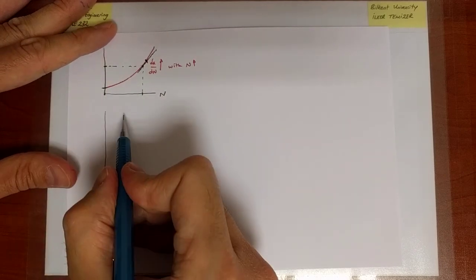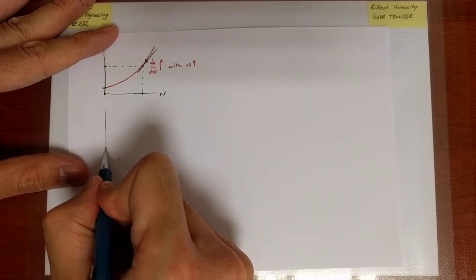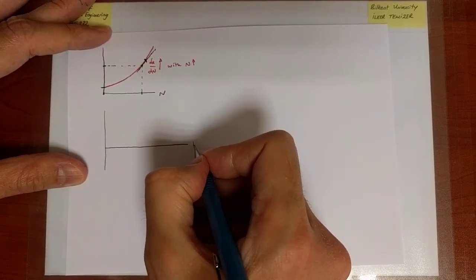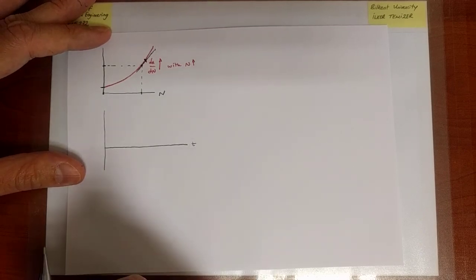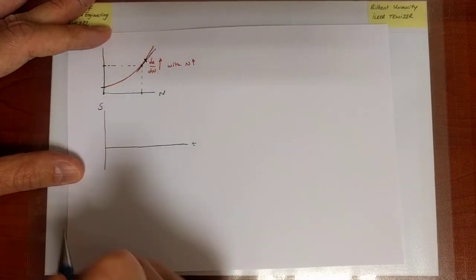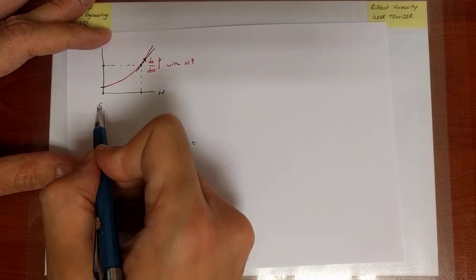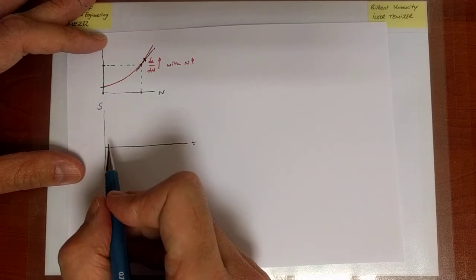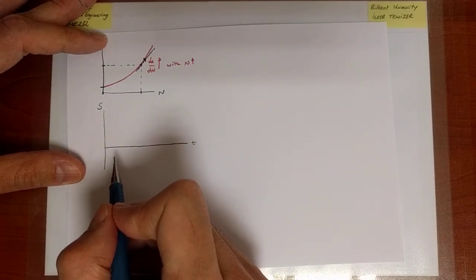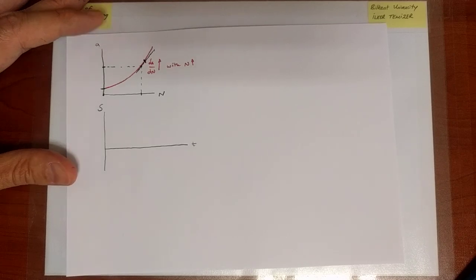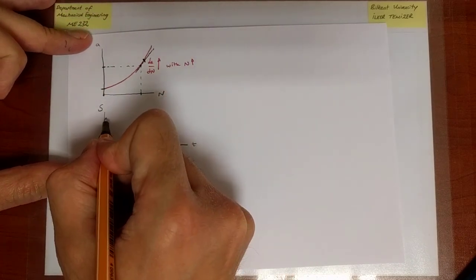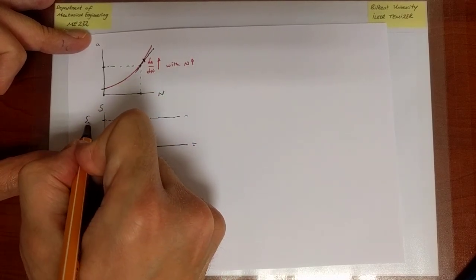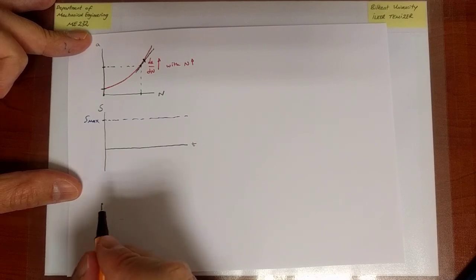The first thing we need to do is introduce some terminology associated with cyclic loading. This axis is going to be time — it could have been number of cycles; it's eventually inconsequential. And this axis is the load S, which has to do with the gross stress. Let us assume that the load variation goes between a maximum value and a minimum value, which is not necessarily going to be zero.